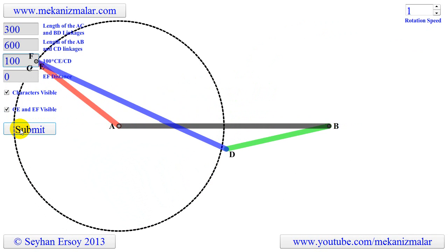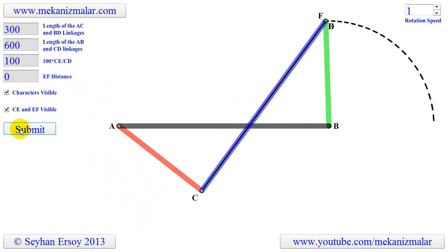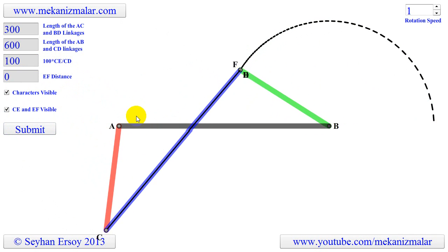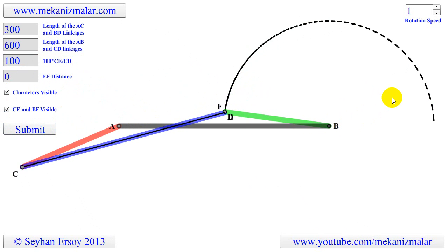Now let's make CE equal to CD, then curve becomes a circle around the B, but rotation is not uniform as the line segment's length is changing.